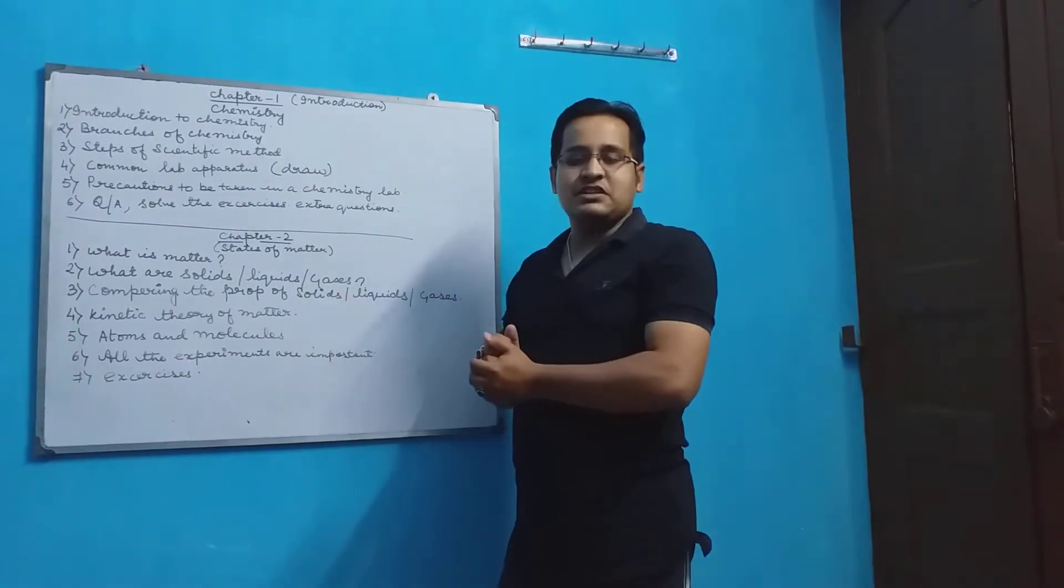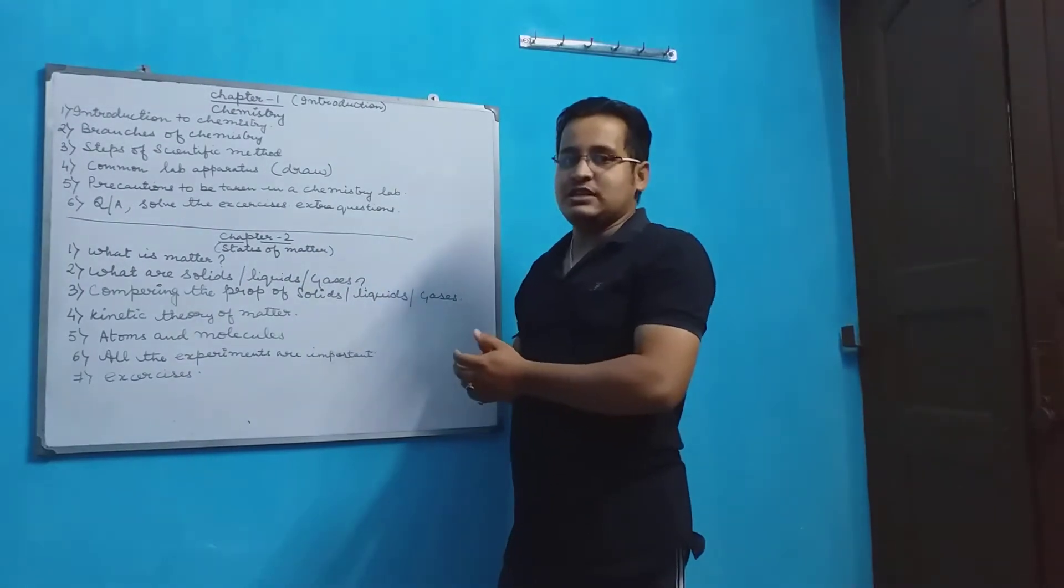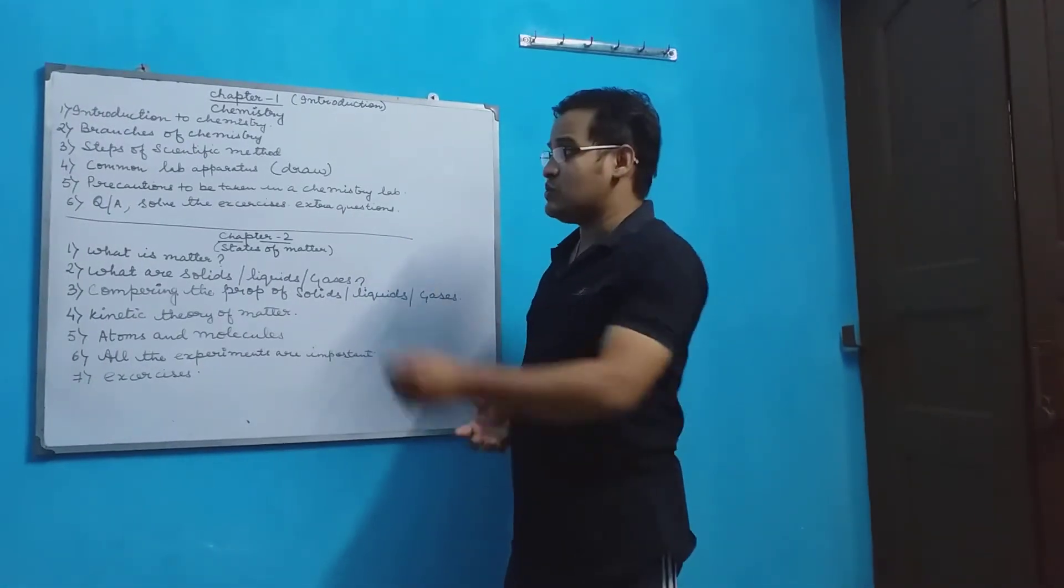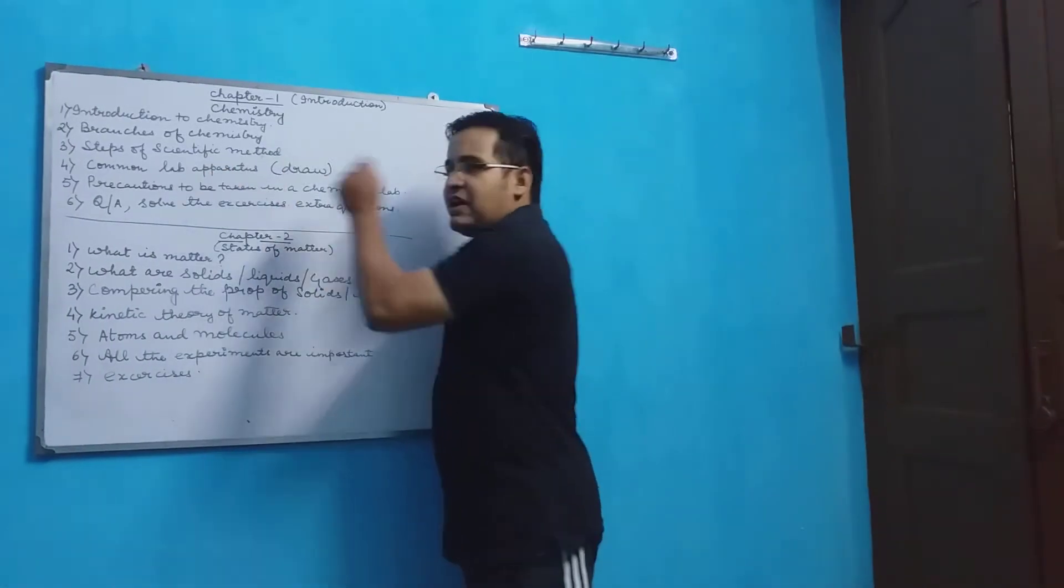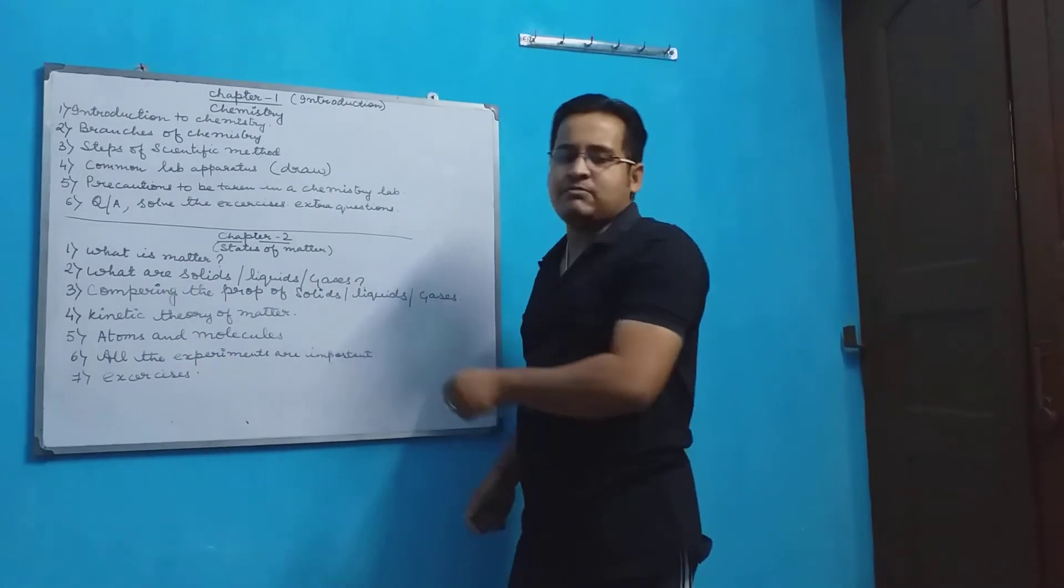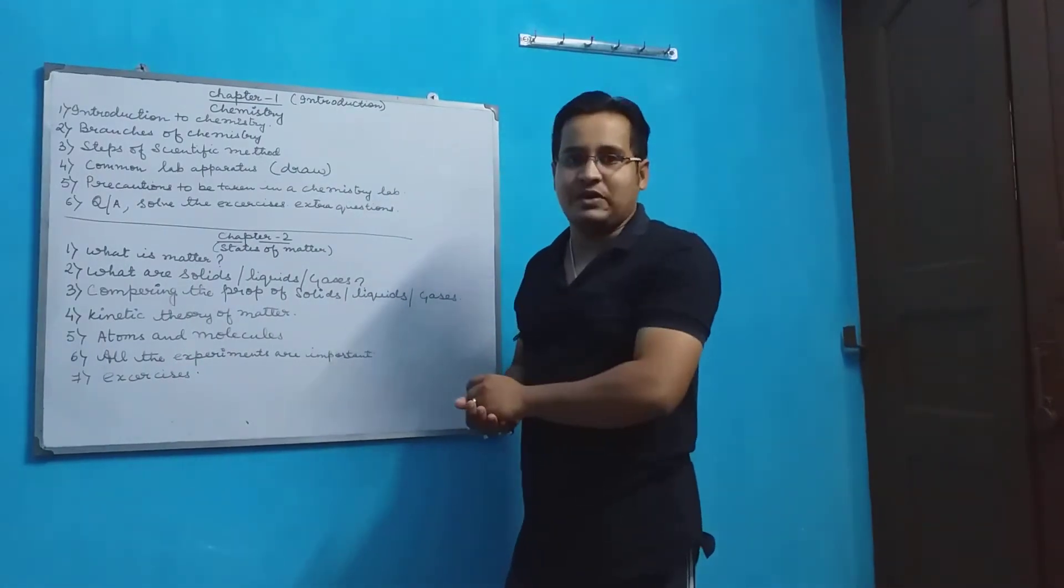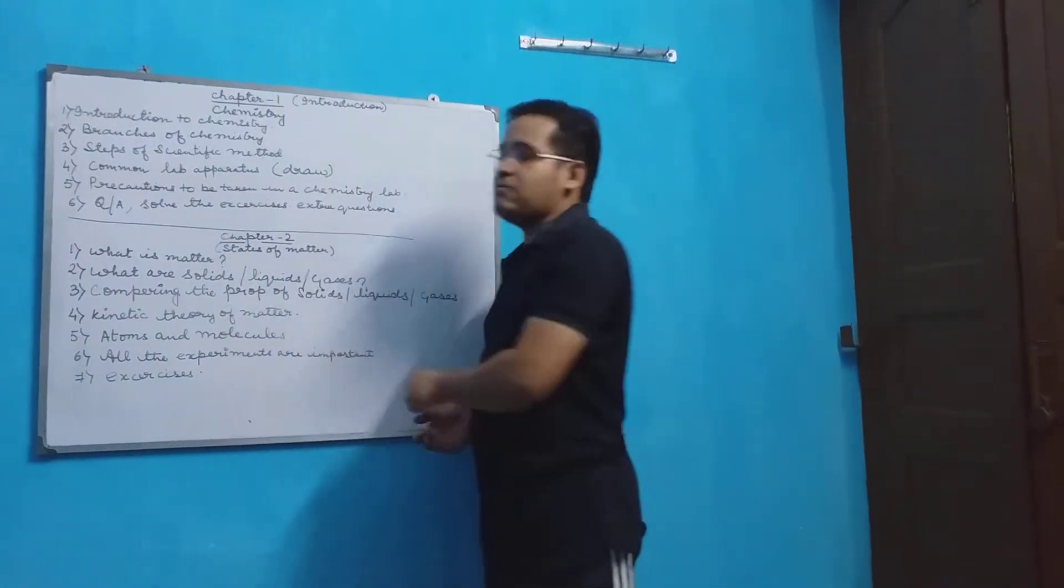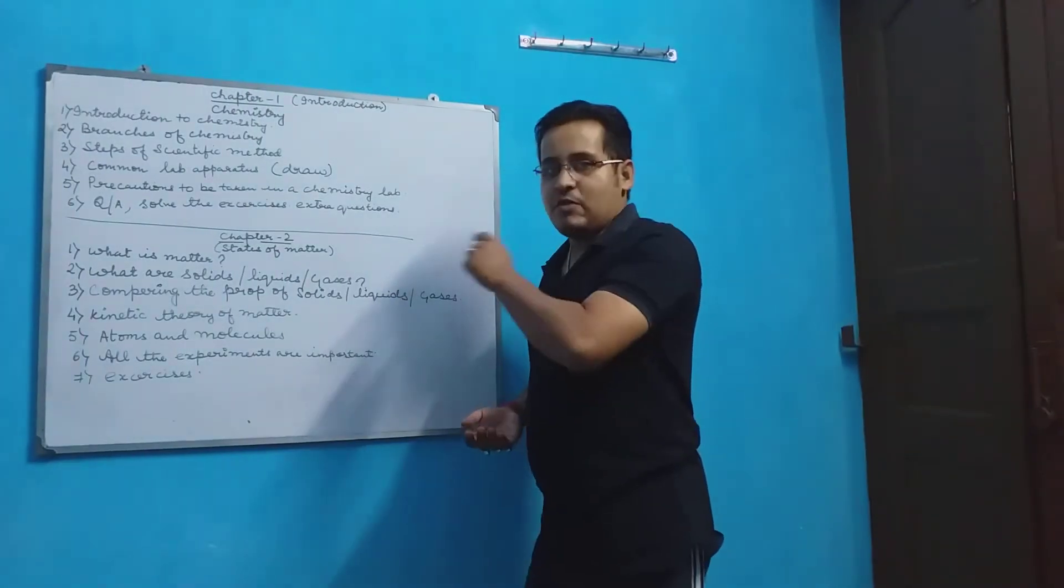The Bunsen burner, the test tubes, the spirit lamps, the chemicals, all those are very important. So these are to be read very minutely and the diagrams of them are to be drawn in the copy. And the importance of them are also to be noted down in the book and in the copy itself.